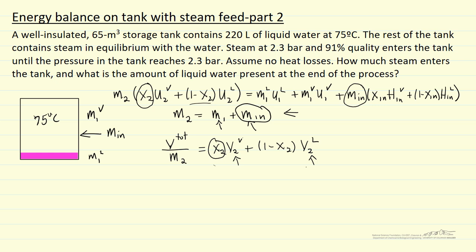First let's calculate how much liquid we have, how many kilograms. We have 220 liters of liquid, go to the steam tables at 75 degrees saturation conditions, and look up the specific volume. That value is 0.001026 cubic meters per kilogram. We do a units conversion of 10 to the third liters is a cubic meter and that gives us 214.4 kilograms of liquid at the start.